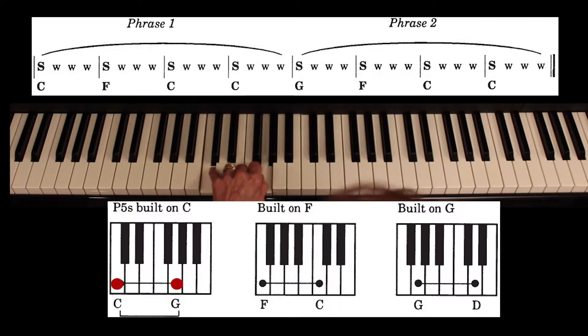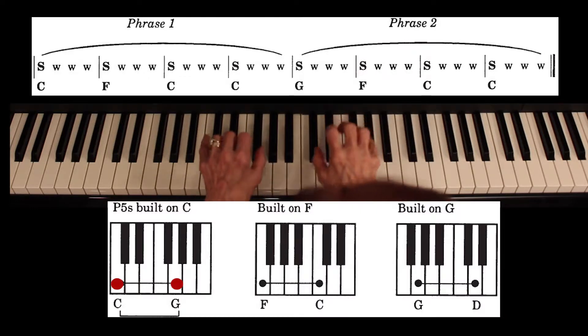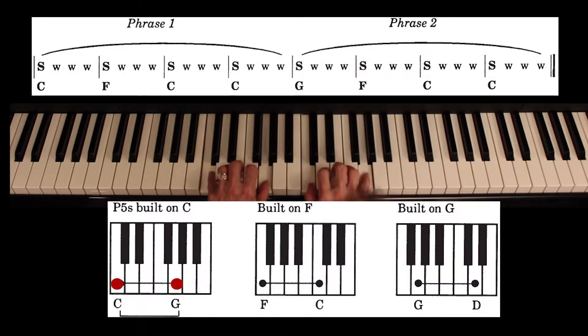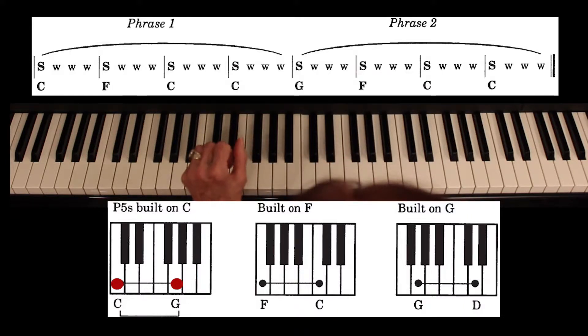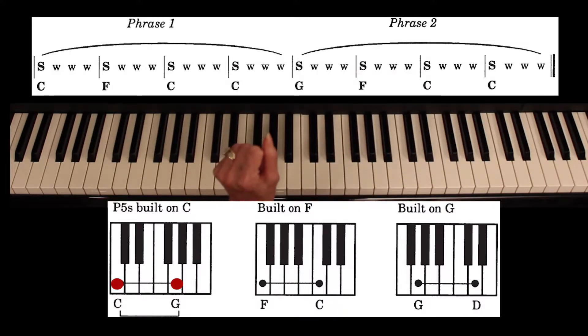If you're following along in the book, this is on pages three and four. So we have a perfect fifth, twinkle twinkle, built on C. Now let's get everything out of the way so we see clearly.